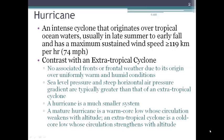Hurricanes are the main tropical cyclones that we talk about. A hurricane is an intense cyclone that originates over tropical ocean waters, usually in the late summer or early fall, and it has maximum sustained wind speeds of at least 74 miles per hour.